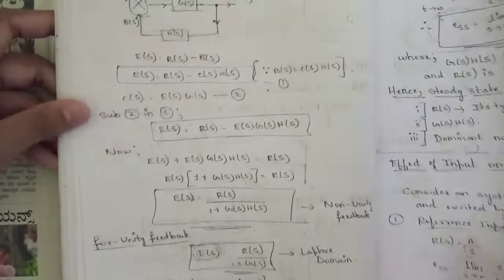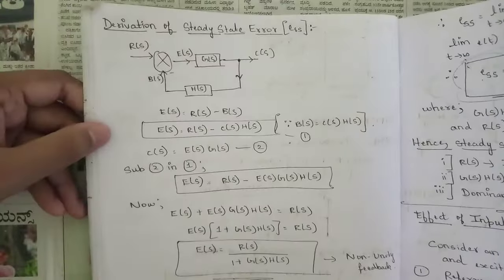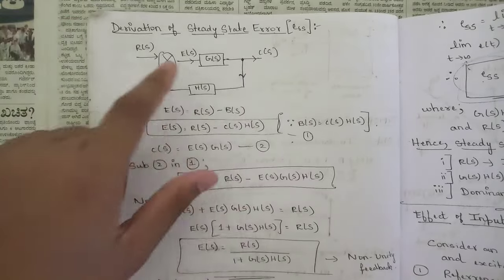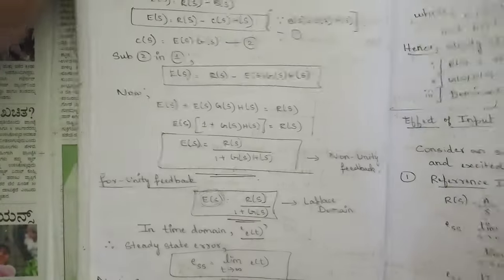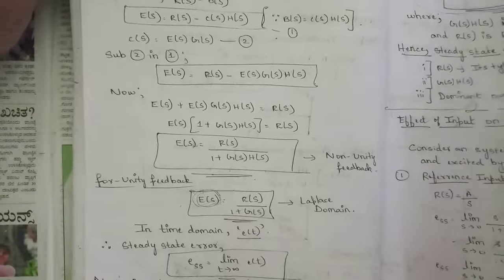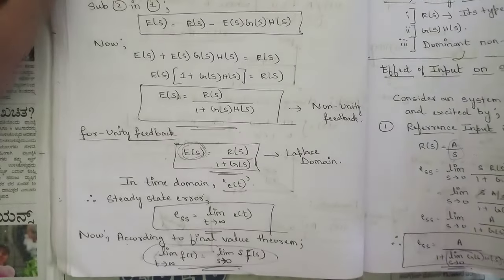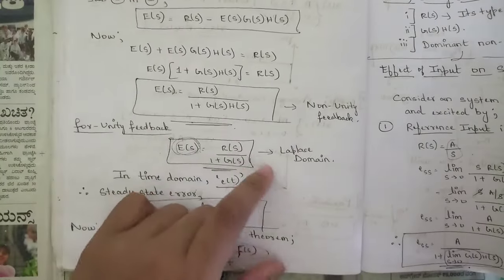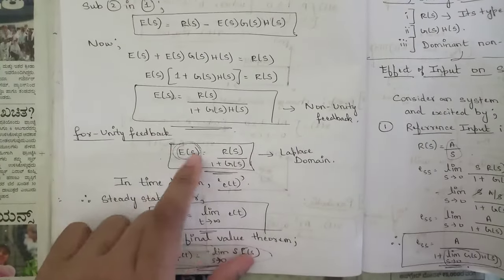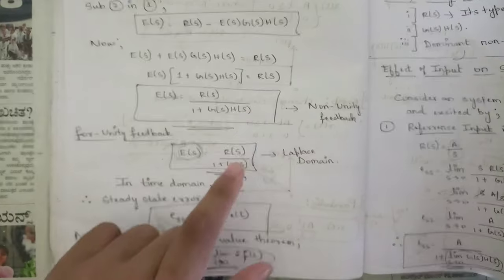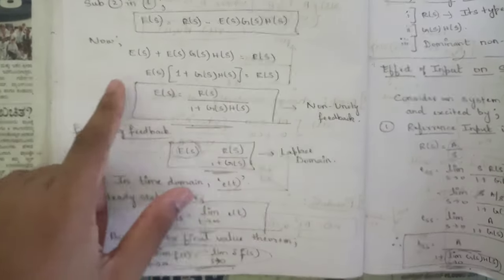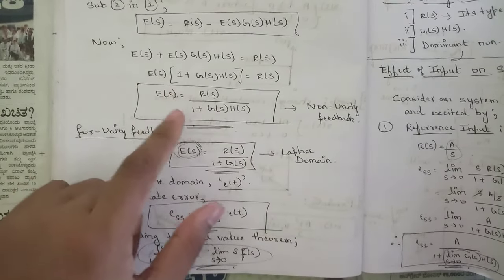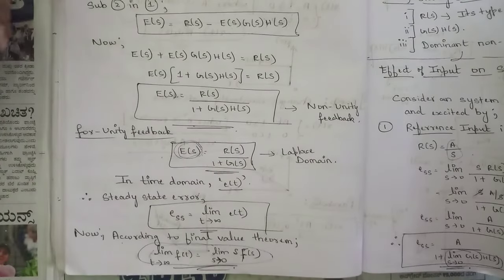We also discussed the derivation of steady state error for a simple minor loop. For a unity feedback system, the steady state error is given as E(s) = R(s) / (1 + G(s)). For a non-unity feedback system, it is given as E(s) = R(s) / (1 + G(s)·H(s)).